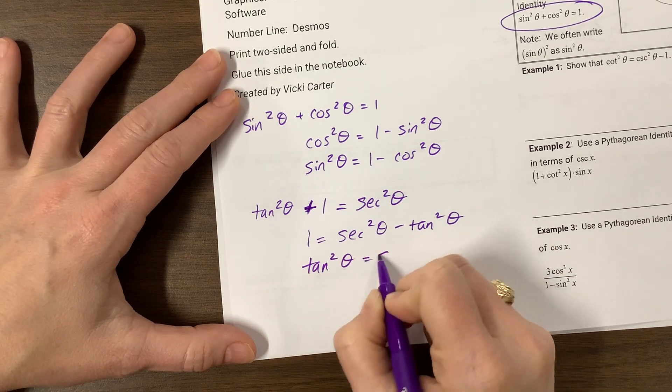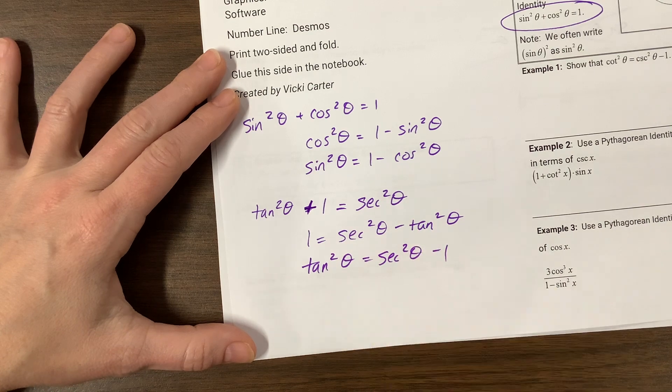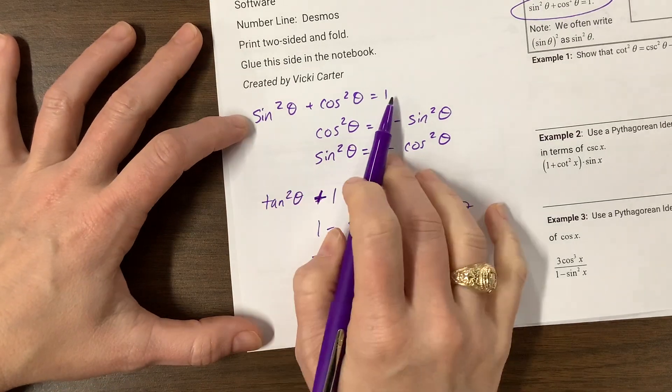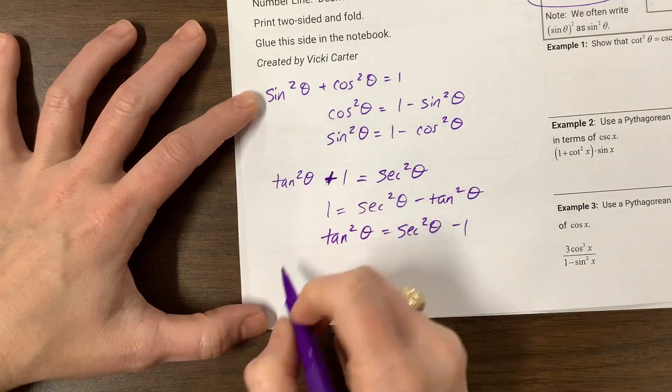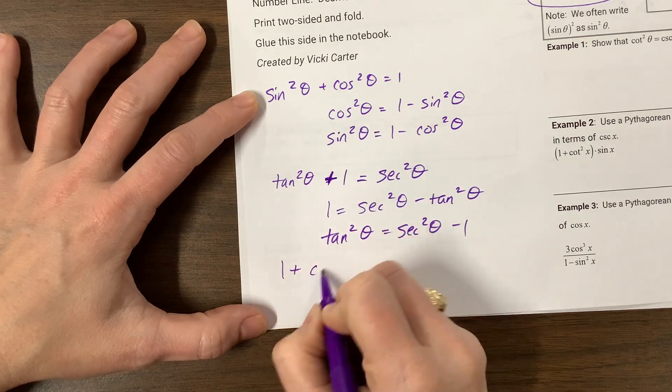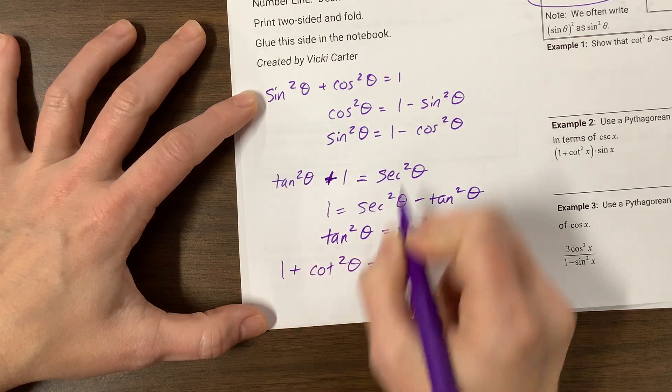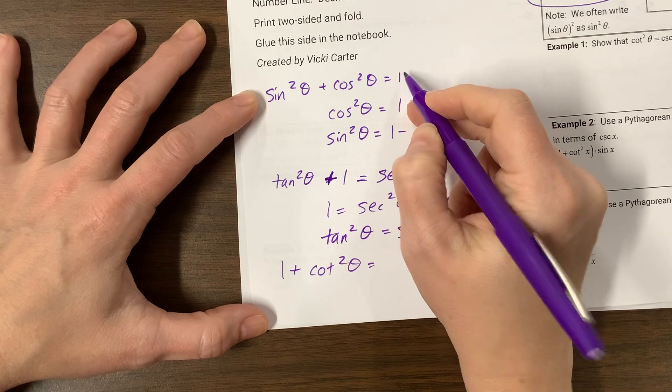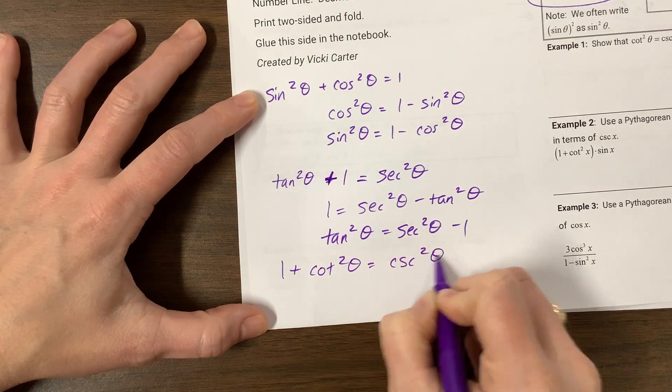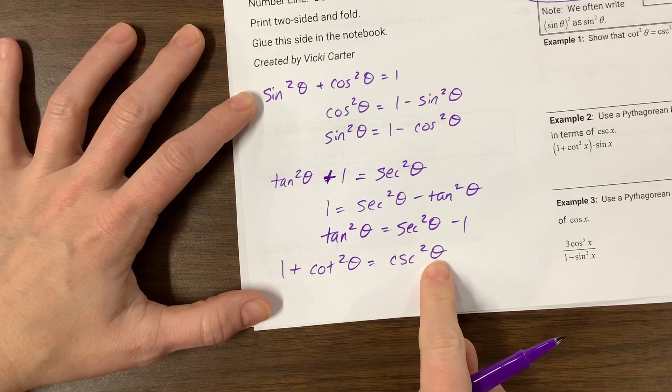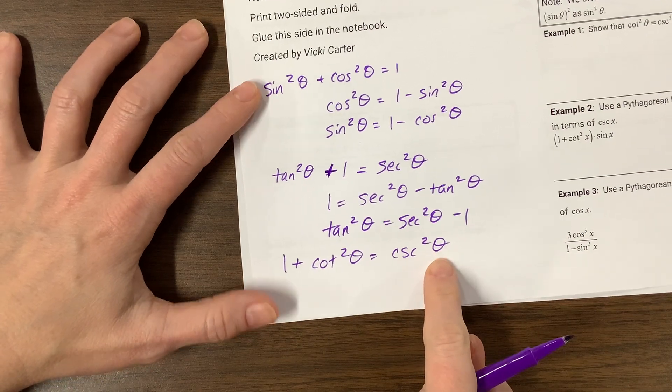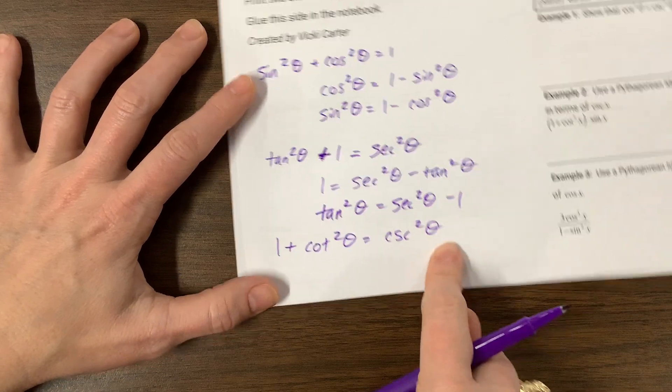So then we also have tangent squared is equal to secant squared theta minus one. Then I can also come back to that original one and divide by sine squared. So that's one plus cotangent squared is equal to divide this by sine squared and it's cosecant squared theta. By the way, I sometimes forget to say the theta, but I never forget to write it. If you forget to write it, you're wrong. So we have to have that.